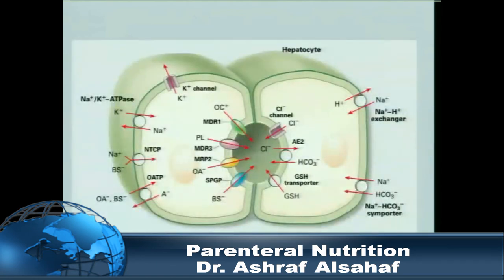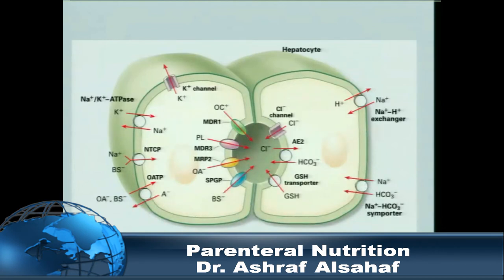At the level of the hepatocyte, the main transporters are MDR2 and the bile salt export pump (BSEP). If there is a genetic defect in BSEP, it causes PFIC type 2. Products of TPN can also affect that pump. MDR3, which is the genetic cause of PFIC type 3, will also be affected by TPN and sepsis.